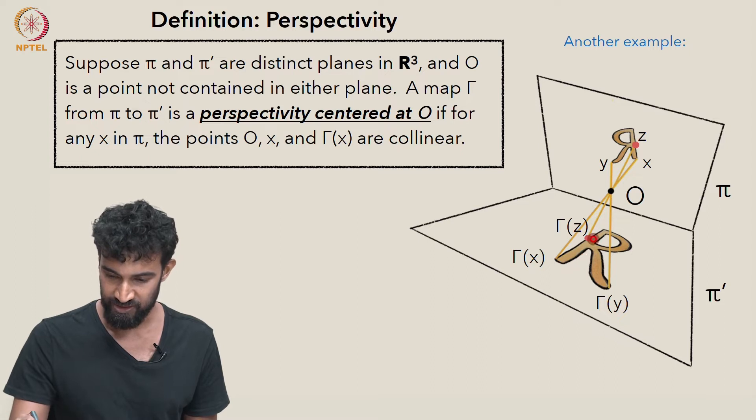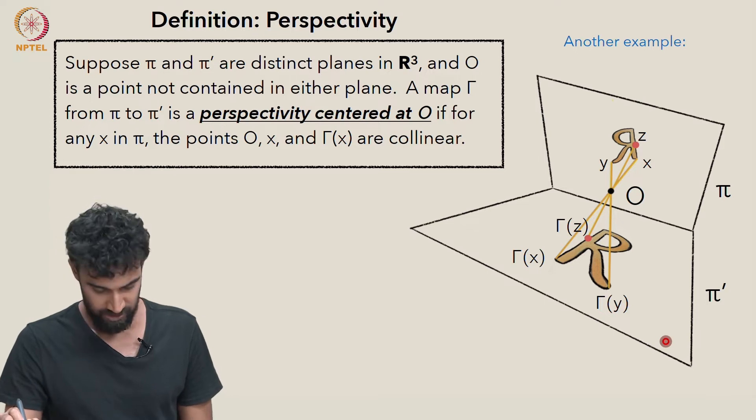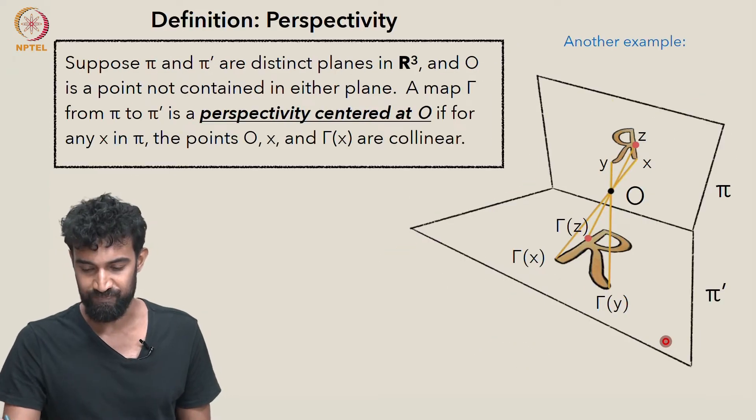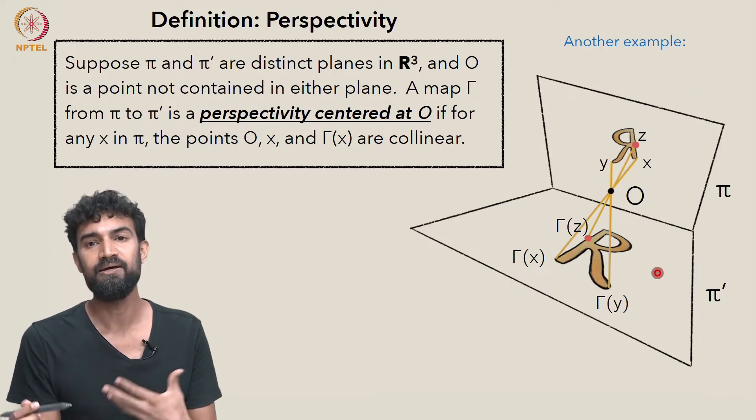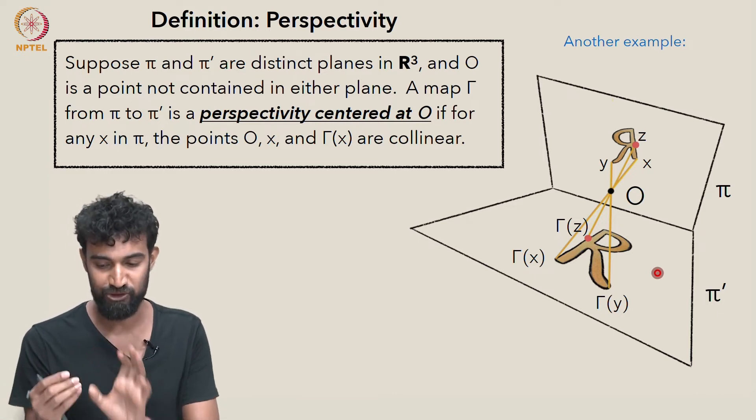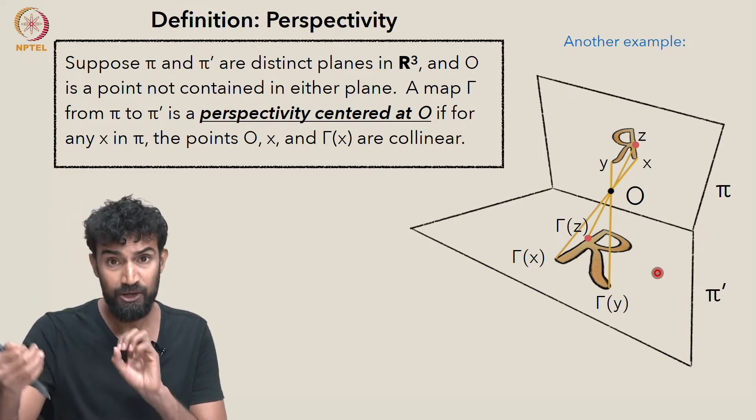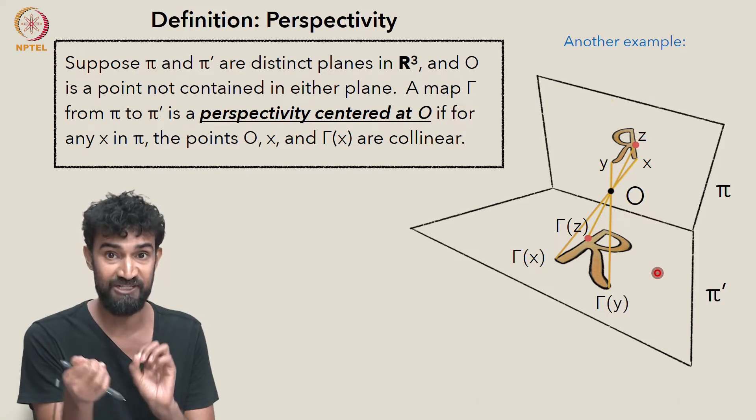γ(z) is here, O and γ(z). Again, we have the same relationship. Γ is somehow linearly projecting points from π to π' through the center of perspectivity, O.